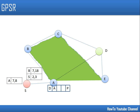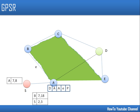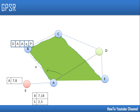Now node a is going to forward this packet in perimeter mode. The third field records the first node in the current face, which is a, so a is inserted into the third field. The fourth field records the first edge in the current face, which is the edge between a and b, denoted e0. Using the right-hand rule in the anticlockwise direction, node a forwards the packet to node b.